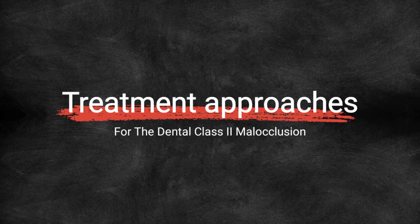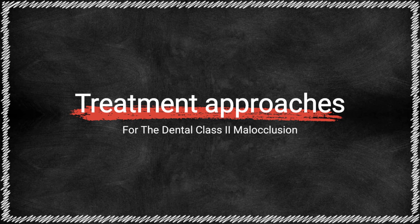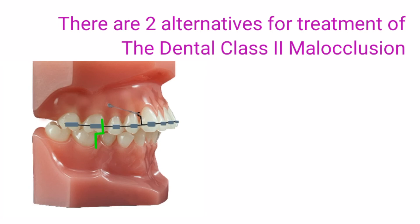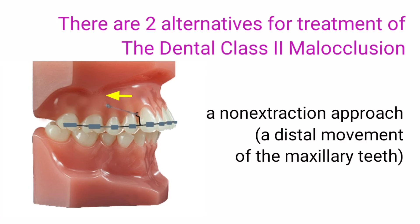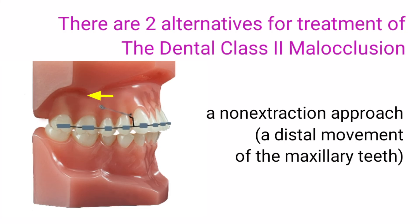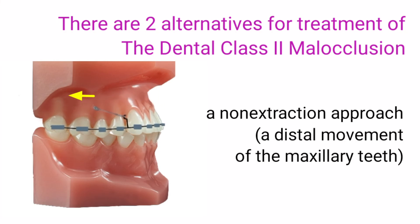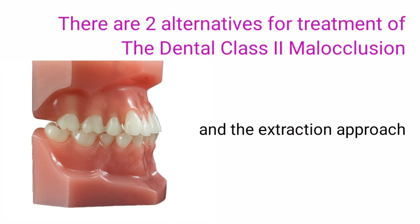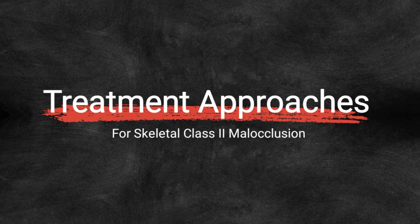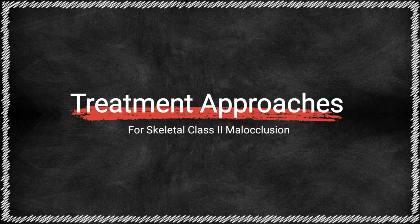Treatment Approaches for Dental Class II Occlusion: There are two alternatives for treatment of dental Class II occlusion — a non-extraction approach involving distal movement of the maxillary teeth, and the extraction approach. The purpose is for gaining space to correct the dental malocclusion.